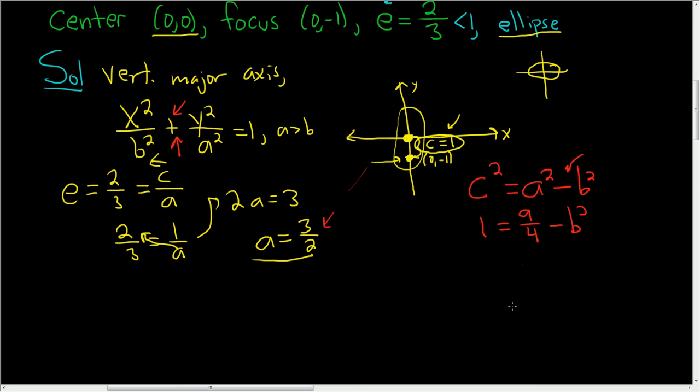Now we'll go ahead and solve this for b squared. So subtracting 9 fourths from both sides, we can think of 1 as 4 fourths. So we get 4 minus 9, so negative 5 fourths, equals negative b squared. Dividing by negative 1, we get b squared equals 5 fourths.